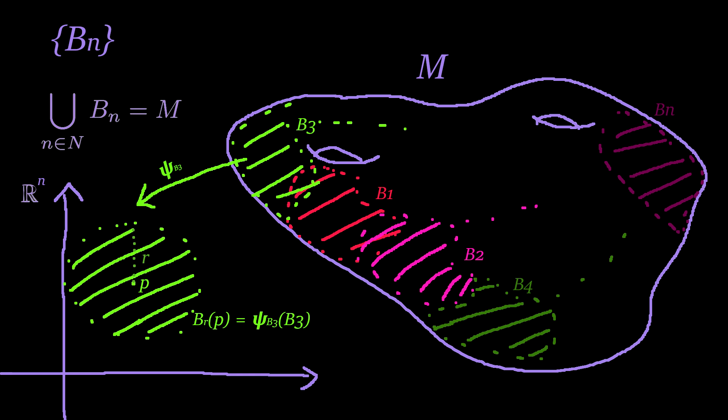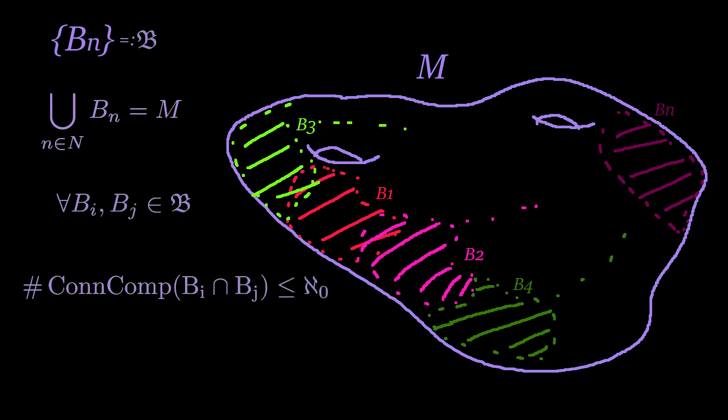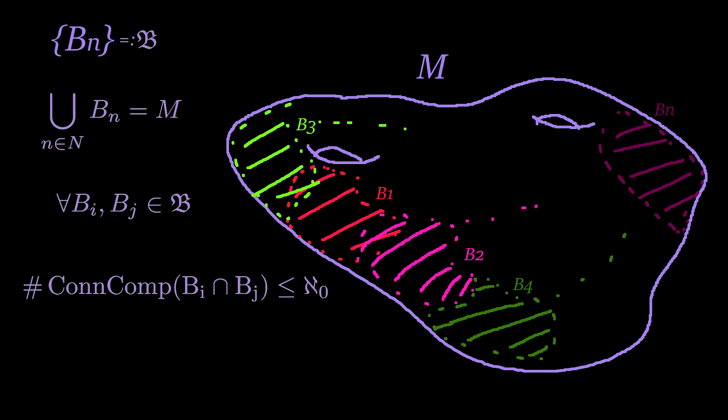At this point, we note that since all of the coordinate balls in our cover are open, and furthermore the finite intersection of open sets are open, for any pair of balls in B, their intersection will be an open set, and thus an open sub-manifold of M.